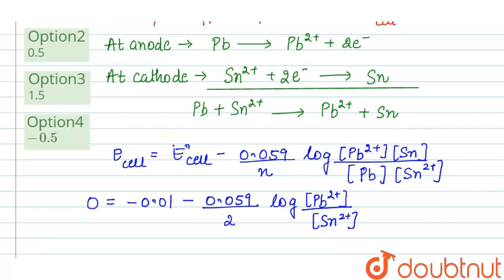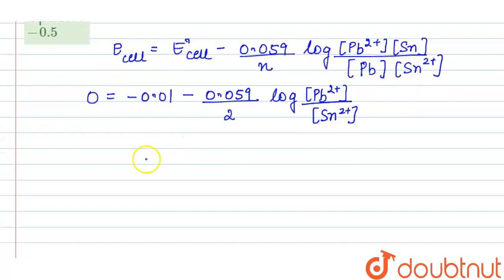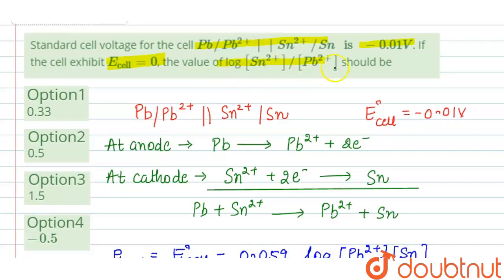From here, if we calculate: (0.059/2) log([Pb2+]/[Sn2+]) = -0.01.